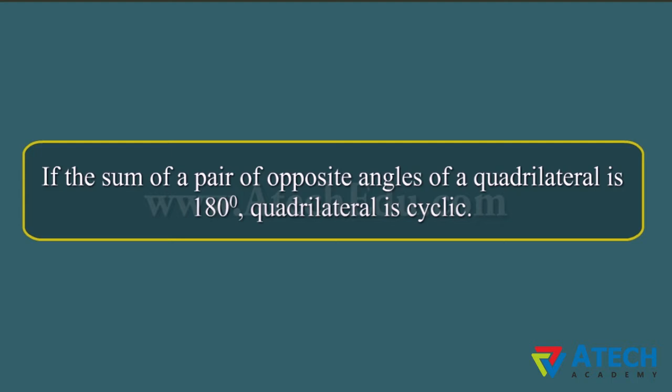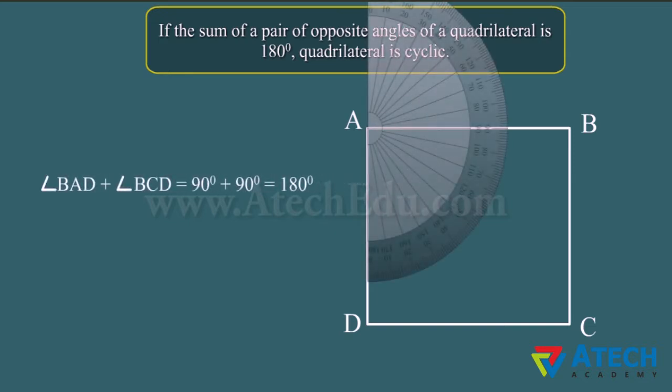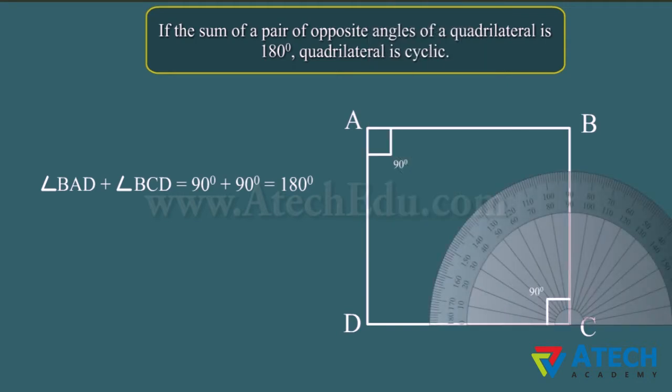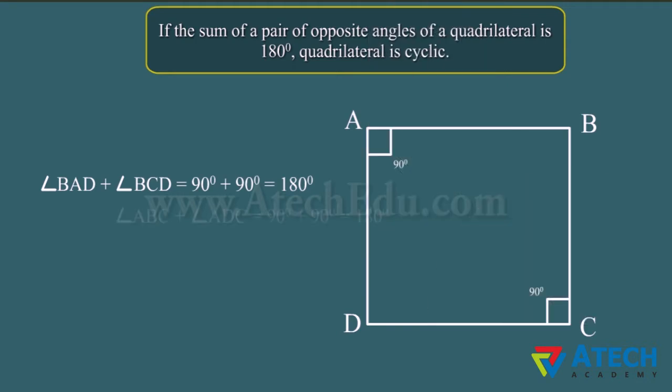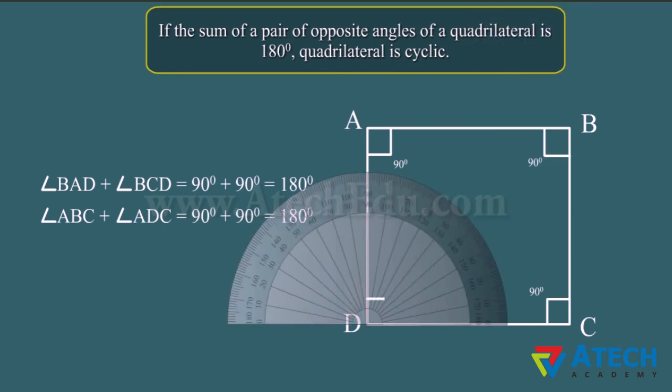For the verification of this theorem, let us consider a square ABCD. Now, sum of the opposite angles BAD and BCD is 180 degrees. Similarly, sum of opposite angles ABC and ADC is 180 degrees.